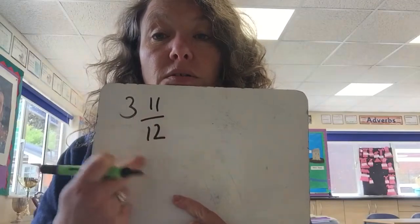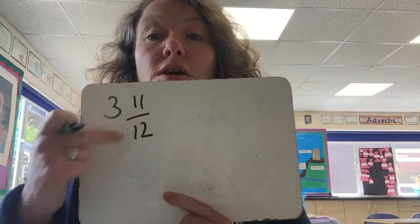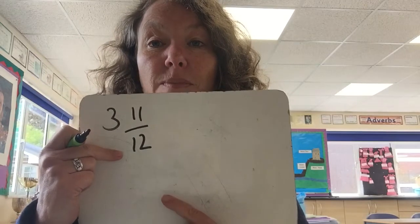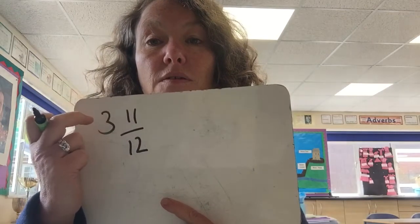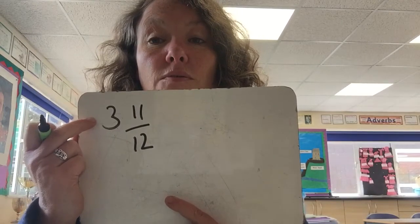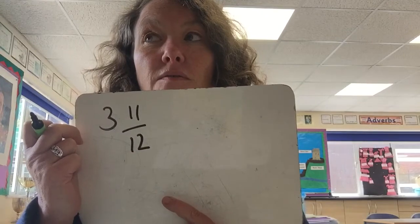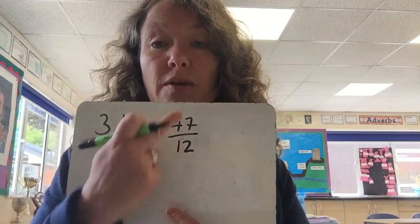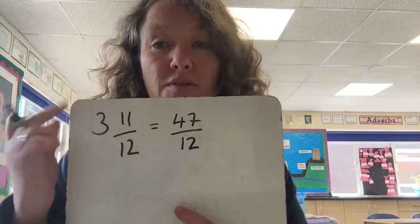We'll do two more just to make sure. Let's try three and 11 twelfths. We're dealing with twelfths — our denominators are twelfths and we've got three whole ones. So we do three times 12 to get our whole ones: three times 12 is 36. Then we add the 11 extra twelfths to 36 — in three whole ones we've got 36 twelfths, plus 11 is 47. So that gives us 47 twelfths. We can check: twelfths into 47 goes three remainder 11, so we know we're right.